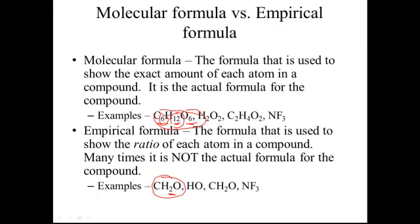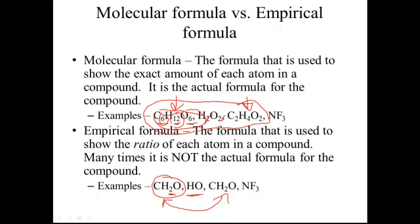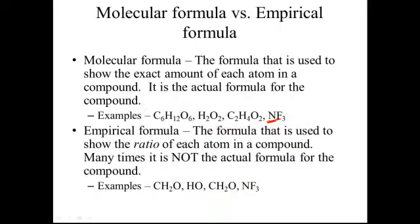For H2O2, dividing both subscripts by 2 gives the empirical formula HO. For acetic acid C2H4O2, dividing by 2 also gives CH2O — the same empirical formula as glucose, even though they're very different compounds. Sometimes the empirical formula is the same as the molecular formula, like NF3, because there's no number greater than 1 that divides into all subscripts — the nitrogen already has a subscript of 1, so it can't be reduced further.